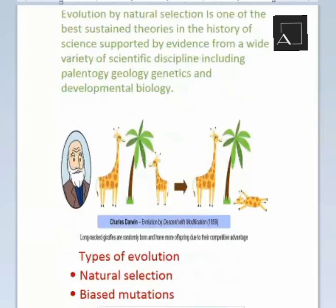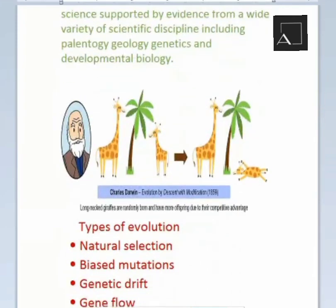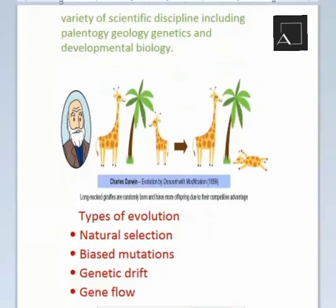Against Charles Darwin's theory of evolution, we can look at the giraffe as an example. Long-necked giraffes are randomly born and have more offspring due to their competitive advantage in reaching food.